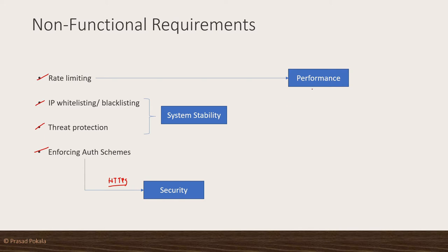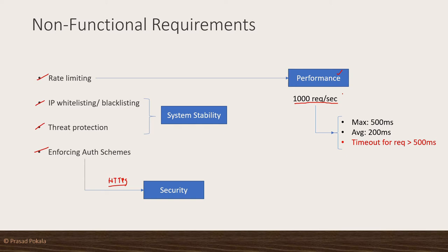And what could be the performance related NFR is like controlling the throughput — saying there can be only a maximum of 1000 requests per second, not more. And even for this 1000 requests per second, the organization may want to enforce an SLA saying: when the throughput is going at this peak rate, the maximum response time allowed should be only 500 milliseconds, and the average should always be closer to 200 milliseconds. Any transaction taking more than 500 milliseconds should be timed out. These are some of the SLAs and NFRs you may have definitely seen in many projects.